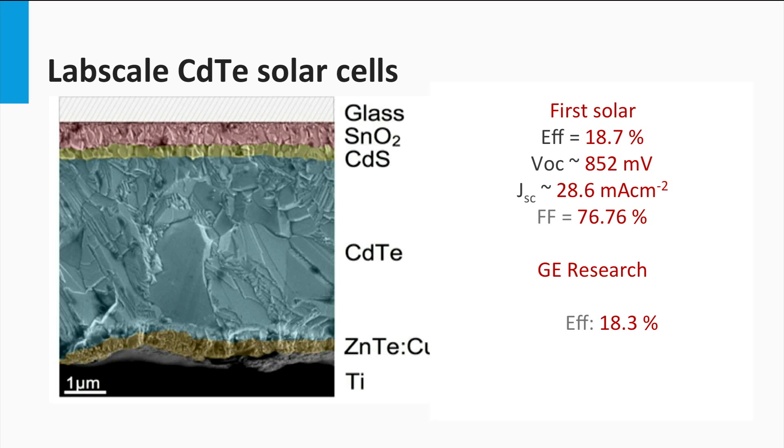The record conversion efficiency of lab-scale solar cells is 18.7% as obtained by First Solar in 2013. The open-circuit voltage of the record cell is 852 mV. The short-circuit current density is 28.6 mA per square cm with a fill factor of 76.7%.